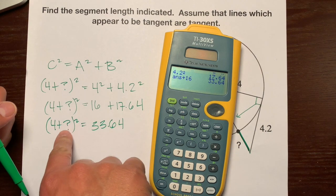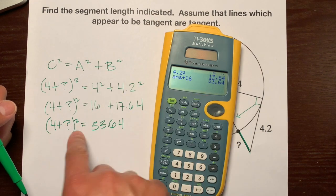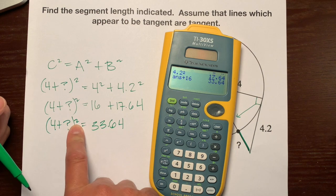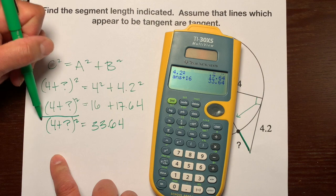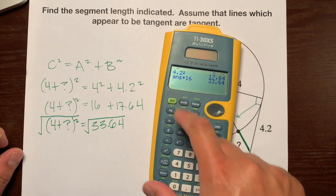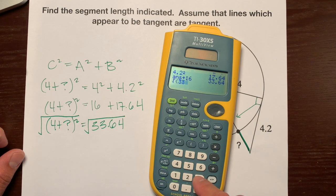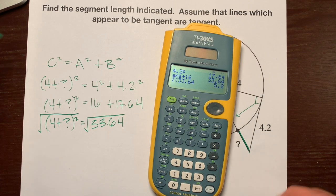And we want to get this question mark by itself. So I want to get rid first. I want to get rid of the square right here. What's the opposite of squaring something? Yeah, I heard you. You said square root. Yeah, good. So we're going to square root both sides. So the square root of 33.64 is 5.8.